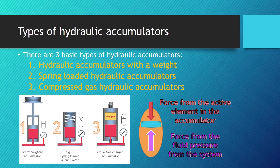The basic division is based on the type of counter force found in the accumulator. Accumulators function automatically, and they work on the principle of counteracting forces. When the pressure in the system from the fluid is large enough — that is, the force from the fluid pressure is larger than the force from the active element in the accumulator — then the hydraulic accumulator starts to pile up work fluid inside of it. The force overpowers the force from the active element, and the accumulator fills up with pressurized fluid.